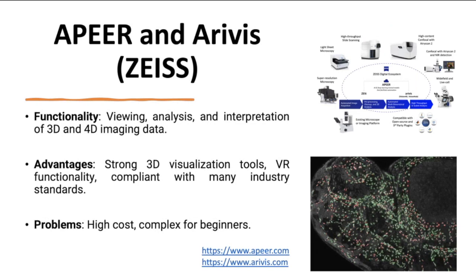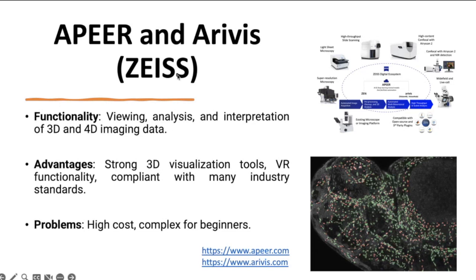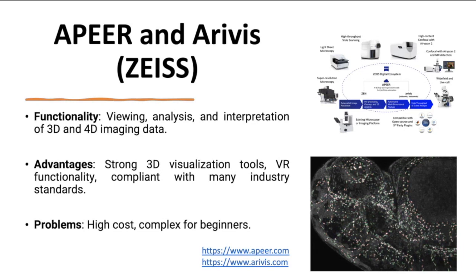All the local-based tools I talked about are open source — you can easily download and use them for your tasks. Apart from these, there are some newer tools that can be very useful for our work, but these are commercial tools that you should pay for. For example, Arivis and Imaris — at the beginning they were open source, but Zeiss bought them and they are now implemented in Zeiss microscopes. You can also purchase a license to use them even without a Zeiss microscope, for any type of images.